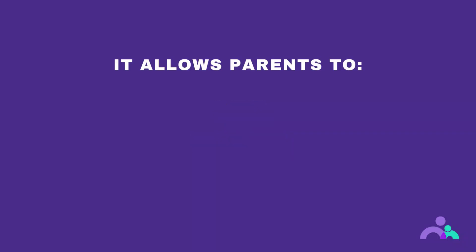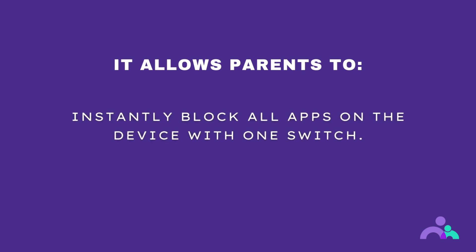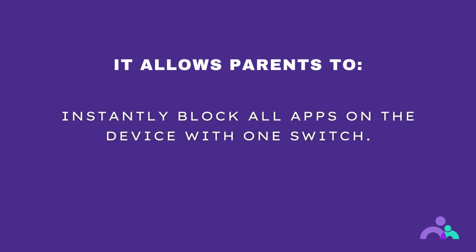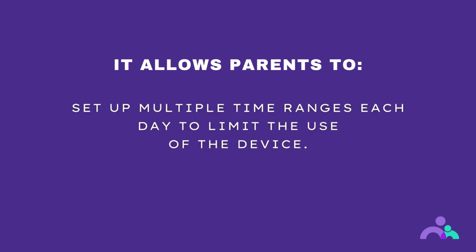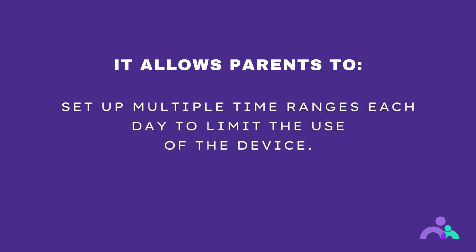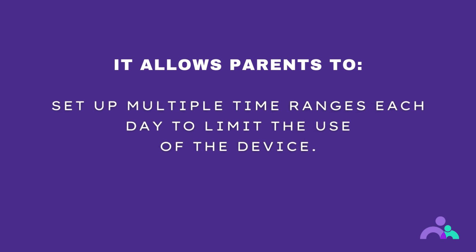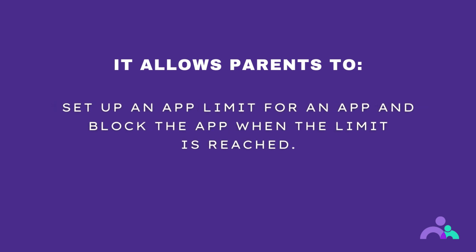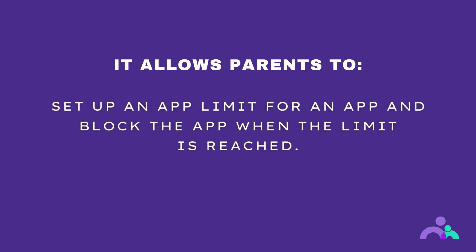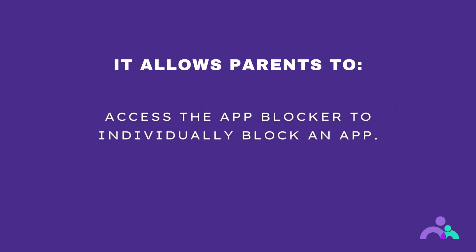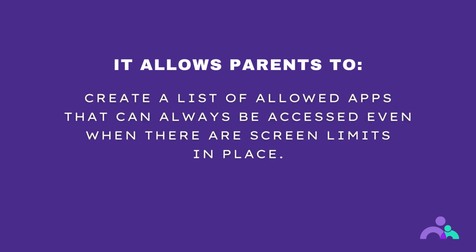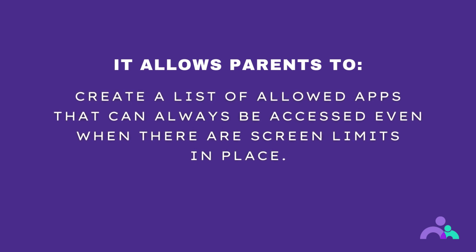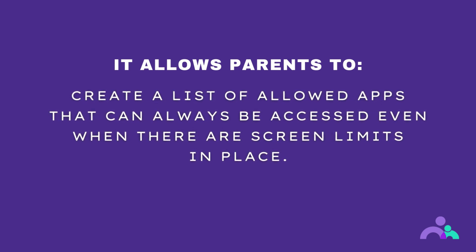Set rules. The set rules feature allows parents to instantly block all apps on the device with one switch, set up a screen time limit for the device, set up multiple time ranges each day for limiting the use of the device, set up an app limit for an app and block the app when the limit is reached, access the app blocker to individually block an app, and create a list of allowed apps that can always be accessed even when there are screen limits in place.